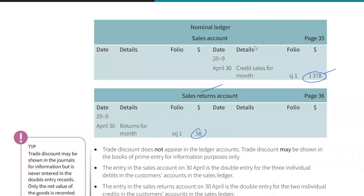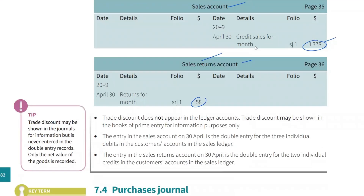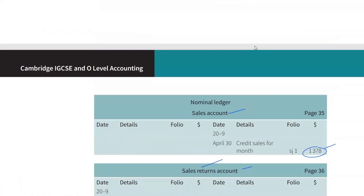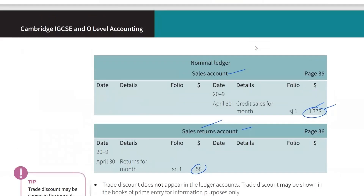That's one of the advantages of journals — it totals up and reduces the number of entries in the sales account, sales returns account, purchase account, and purchase returns account. Trade discount does not appear in ledger accounts; it may be shown as a calculation, but it is not entered as a final figure. The net value is always recorded — 408, after the discount, not 510 before the discount.